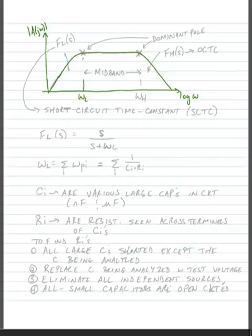So it starts to flatten out at a point we'll label as omega L, the low frequency pole, and it starts to roll off at a frequency we'll call omega H, the high frequency pole. In between this, we have what we'll call the mid-band gain.